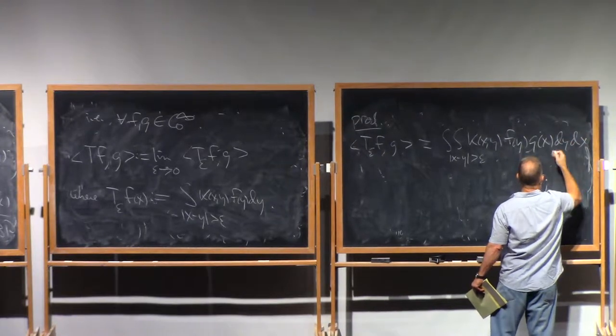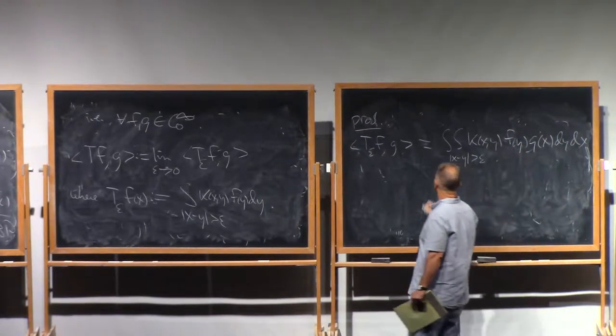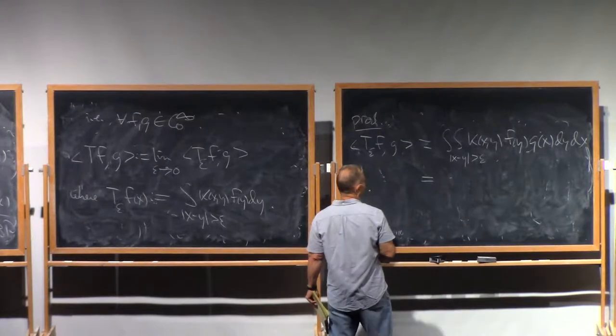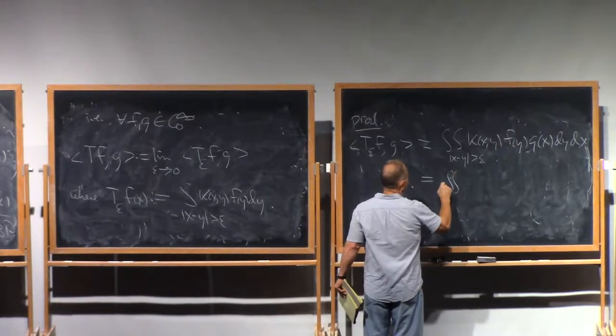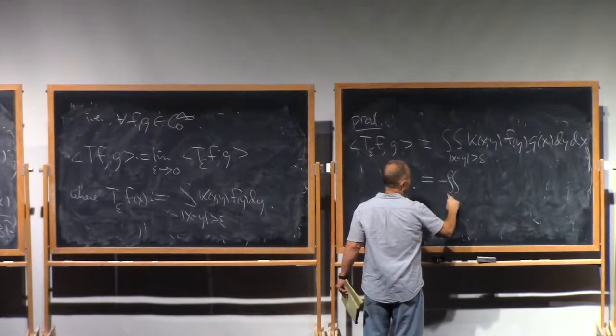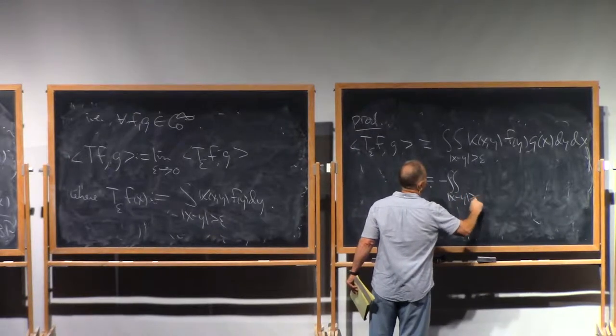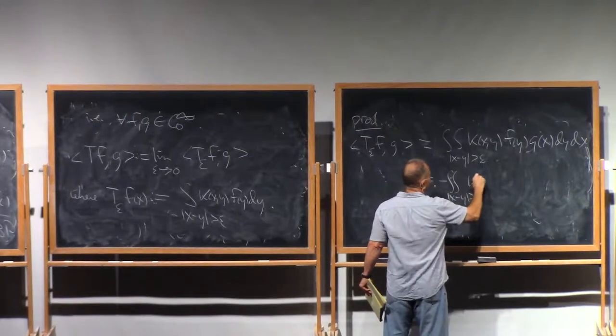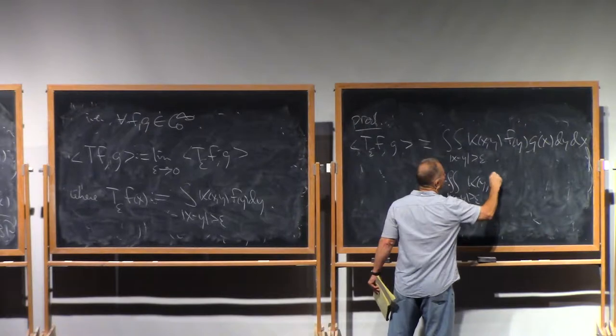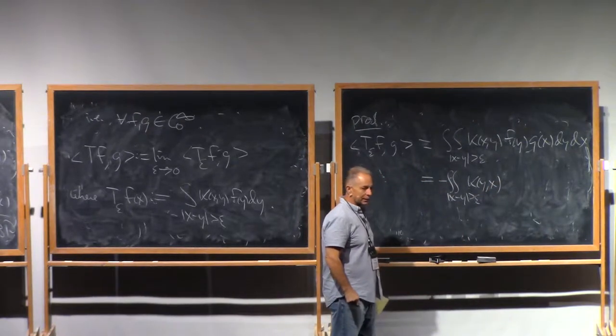dy dx. And by the antisymmetry, this becomes minus the same thing if we replace K by its transpose, K of yx.